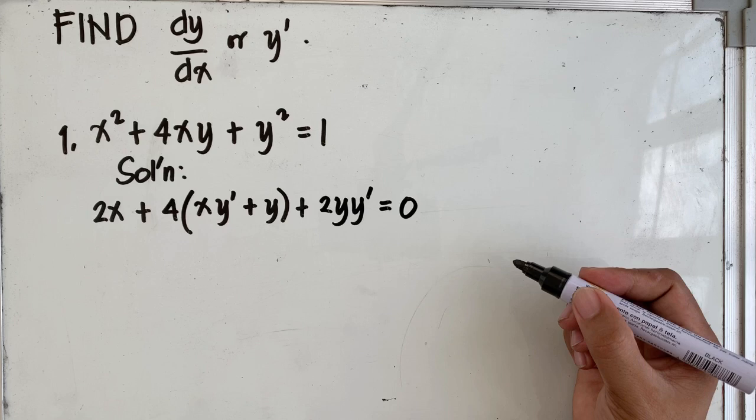Differentiating, we have 2x plus 4 times the quantity xy prime plus y plus 2yy prime equal to 0. On the first and third term, we utilize the power rule, and on the middle term on the left side of the equation, we use the product rule.